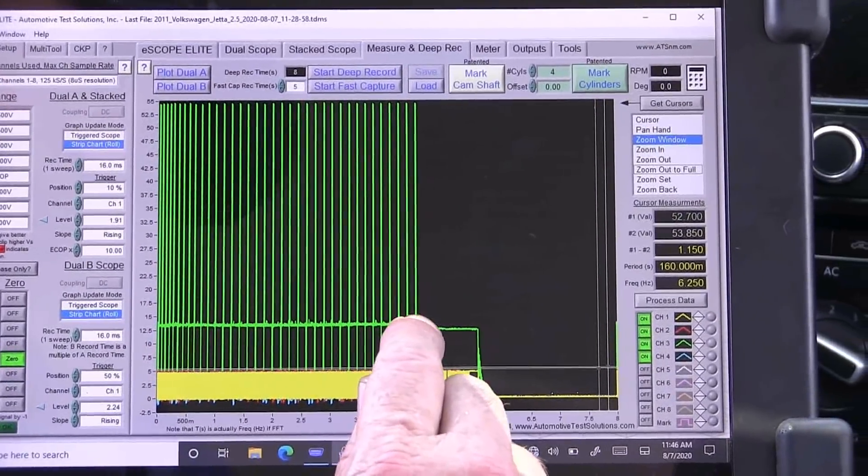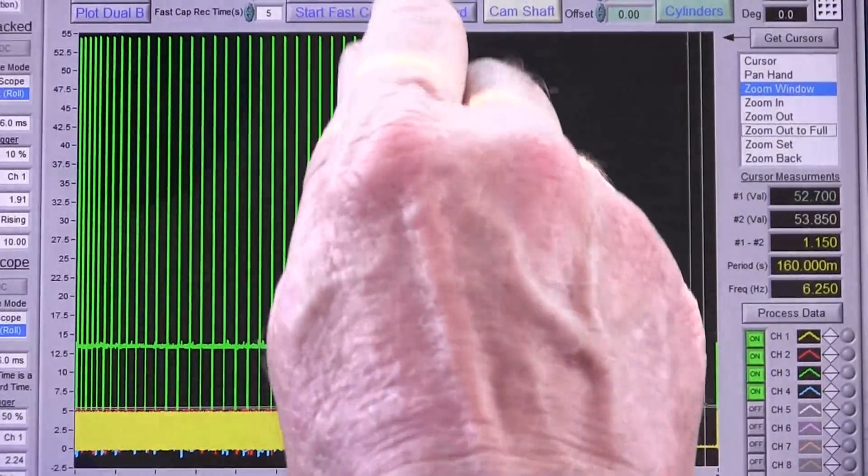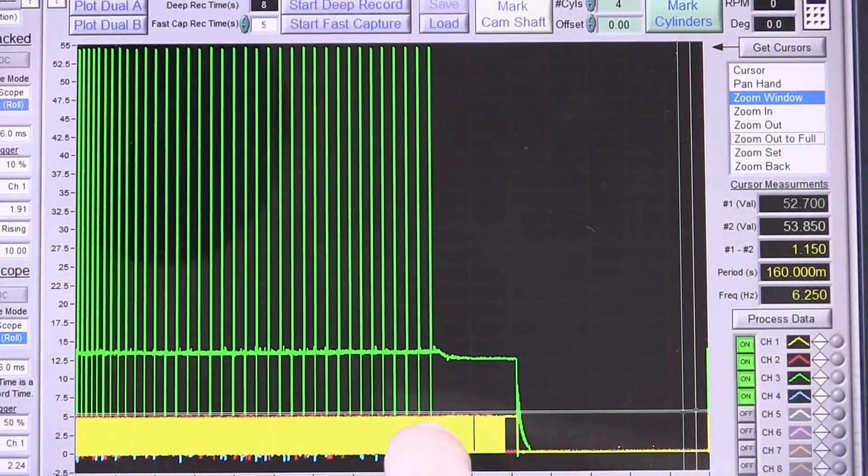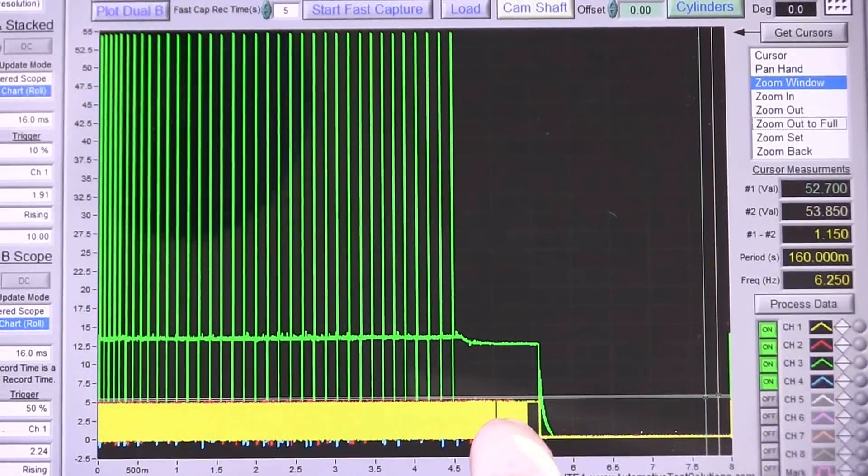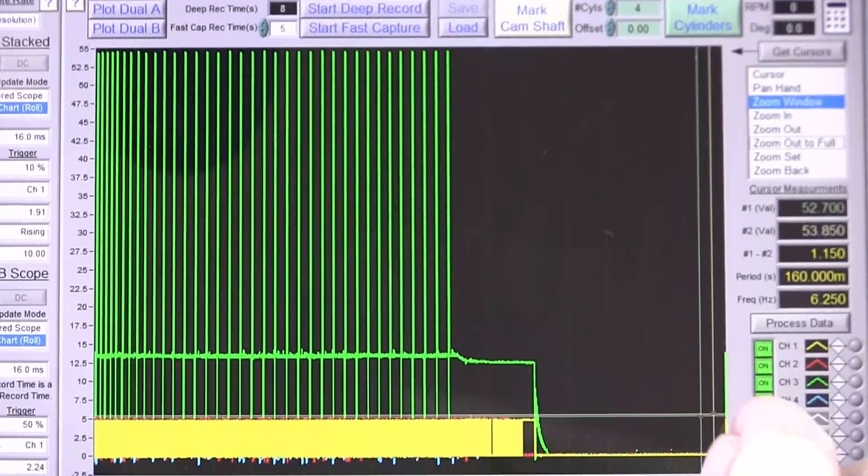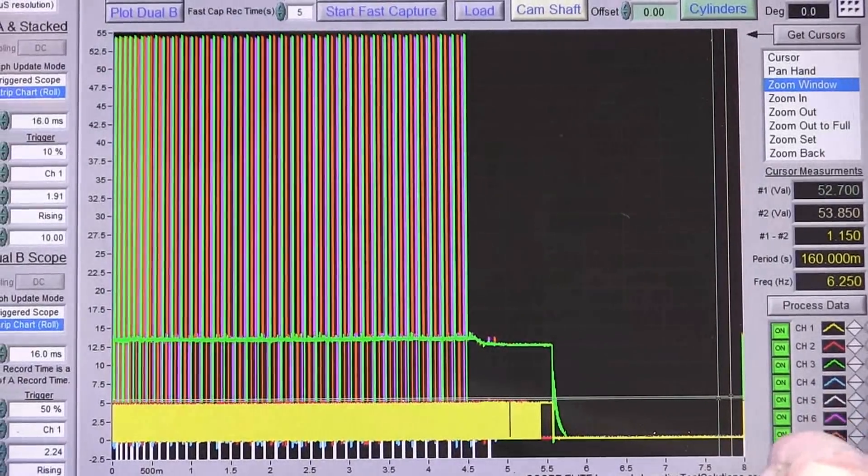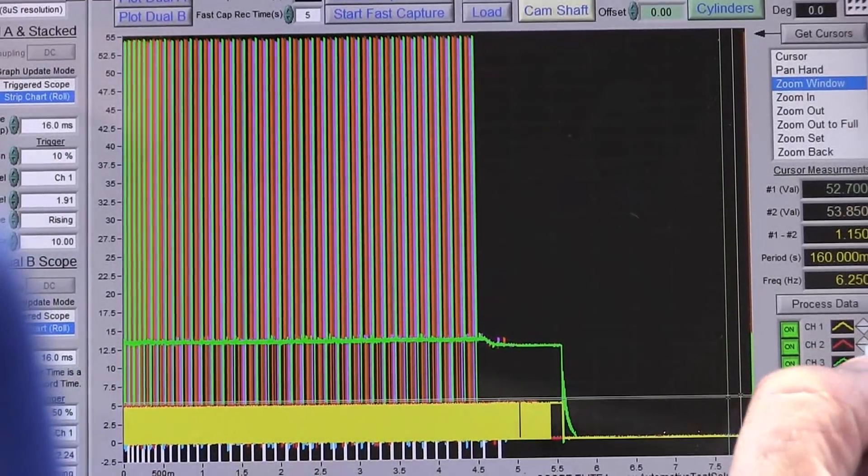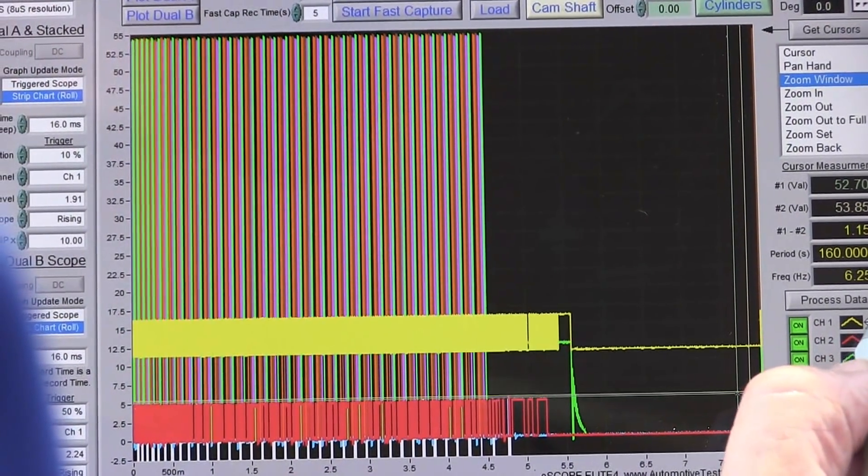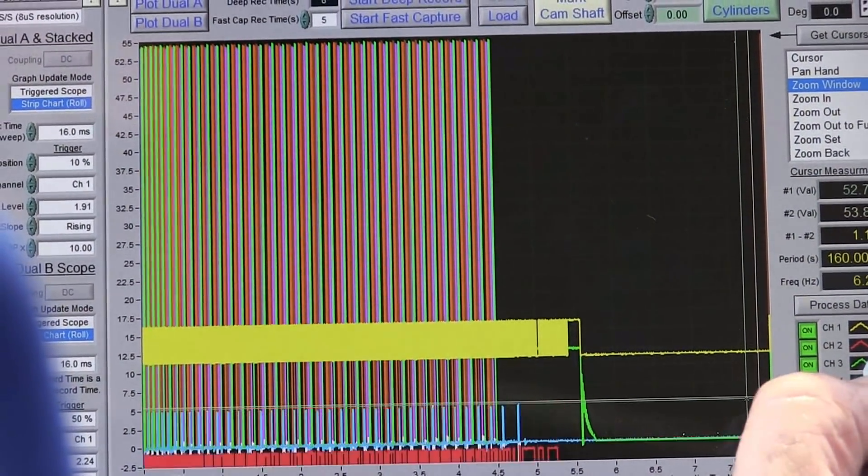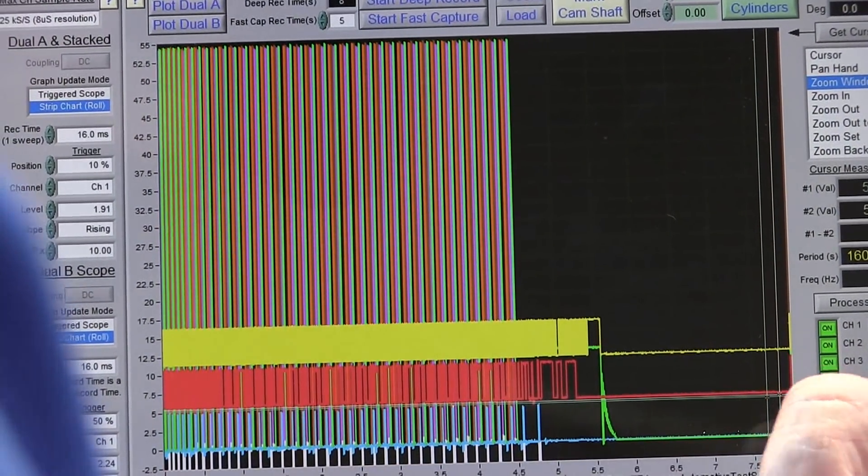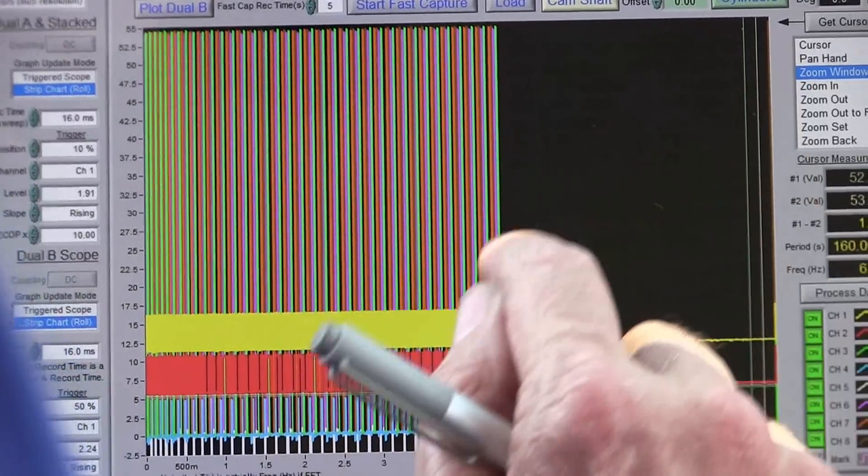We want to stop our data. Right away I can see that I lost the injector. This injector all of a sudden stopped and I still have a crank and it appears I still have a cam. So let's go ahead and turn all these other ones on. And then what I want to do is I want to separate these.